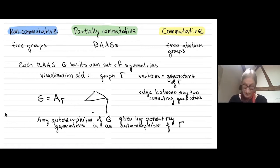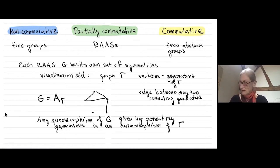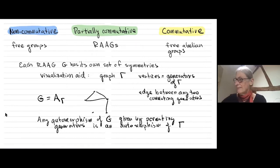That gives you some automorphisms of A_gamma, but in general there are many more. For instance, if gamma has no edges at all then the automorphisms are the entire automorphism group of the free group.